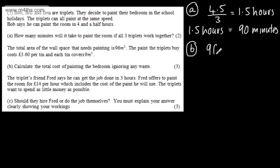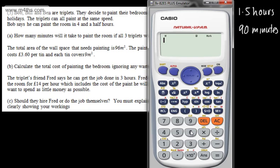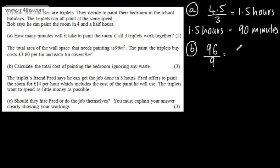So what I'm going to write is 96 — that is the total wall space — divided by 9. So 96 divided by 9 gives us 10.666 recurring. Therefore, we would need 11 tins. The triplets can't buy 10.666 tins, as tins of paint are only sold in discrete values. It's either 10 or 11, so we need 11.